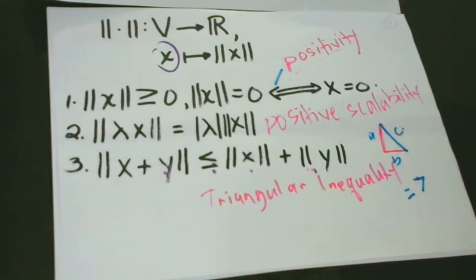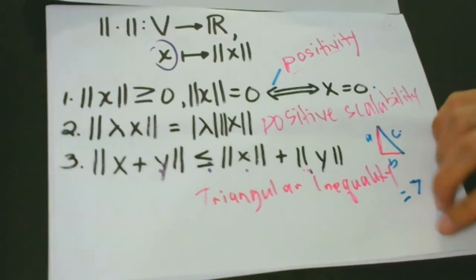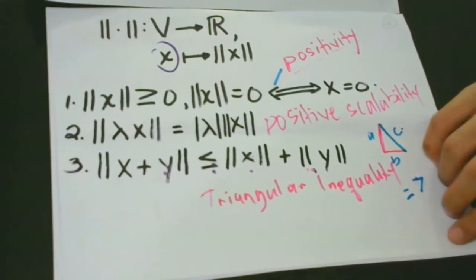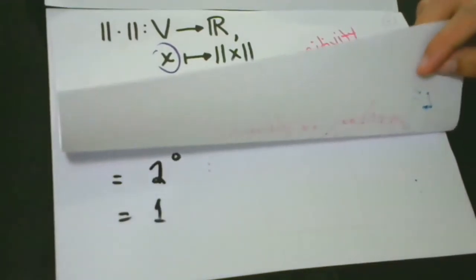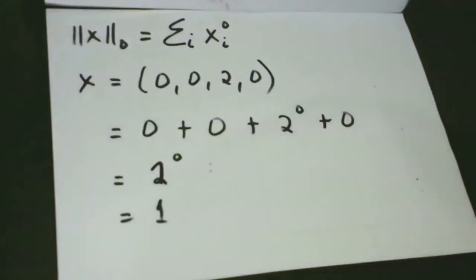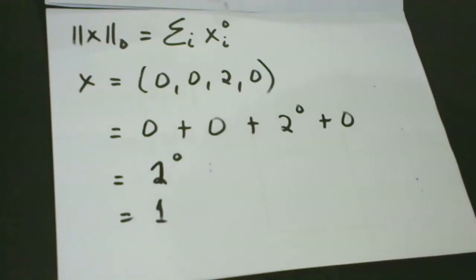There are a number of ways to measure the magnitude of vectors. We have L1, L2, P norm, L infinity, and of course the zero norm, or L0. Let's have them one by one.